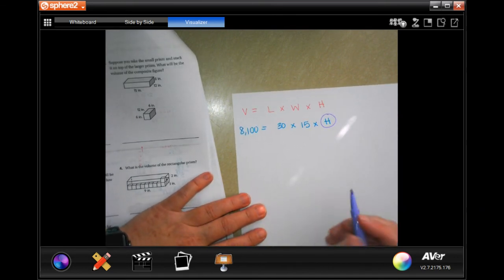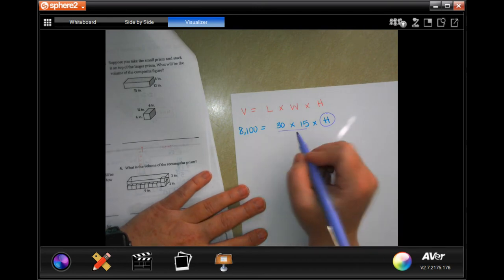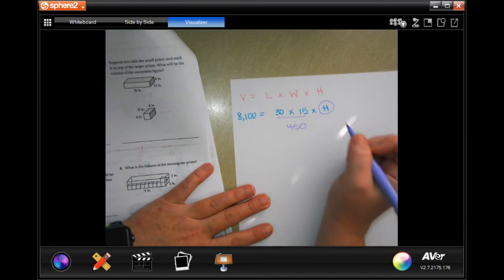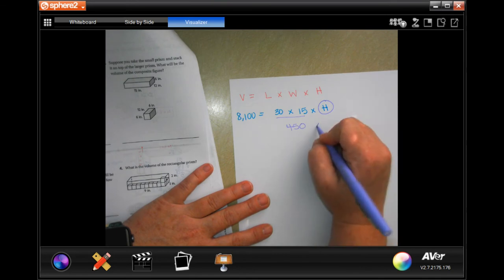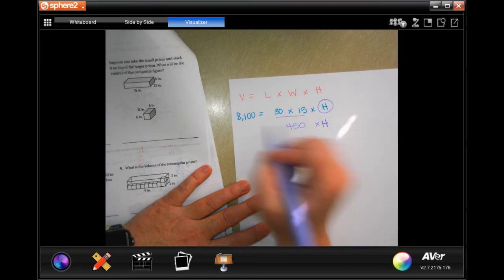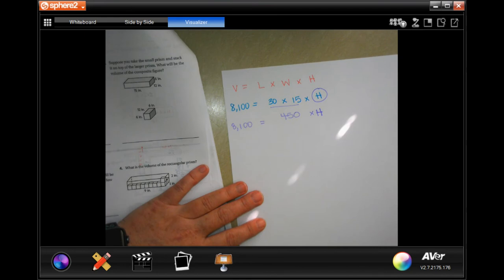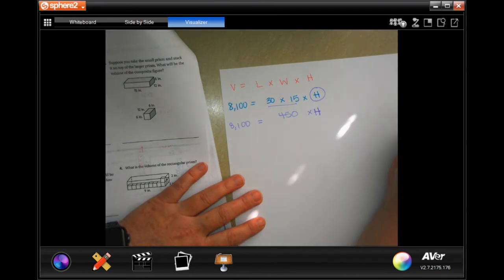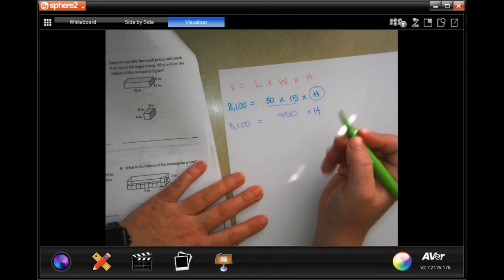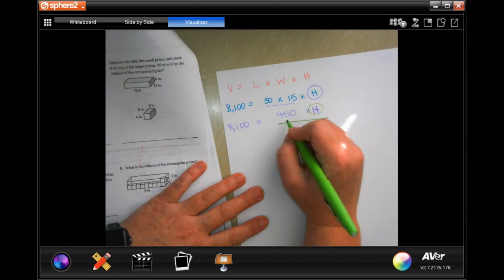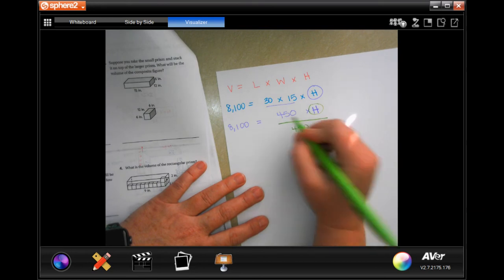First I need to combine my like terms. I know that 3 times 15 is 45, and then I have to add that zero on, so now I have 450 times h, and I still have my 8,100. In order to get h alone, I need to do the opposite of the sign, which is to divide by the number that's with it, which is 450.